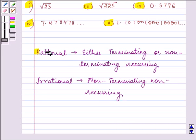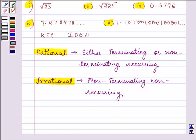So the knowledge of what are rational numbers and what are irrational numbers becomes the key idea of the question through which we can start classifying the given numbers.